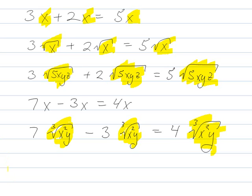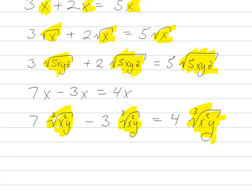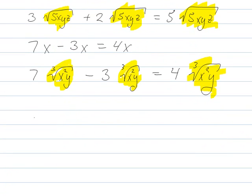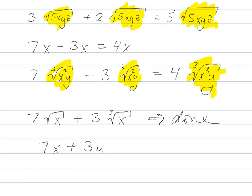A couple of things they'll try to do to trick you sometimes. If you have 7 square root of x plus 3 cube root of x, this is done. There's nothing you can do to this. It would be like saying 7x plus 3y. If the roots are different, like that's a square root and that's a cube root, you're just kind of finished.